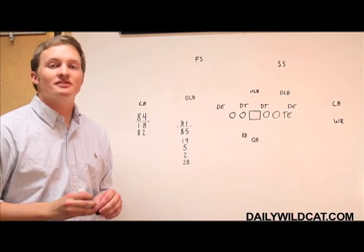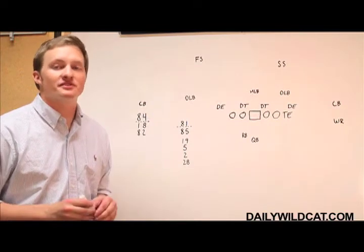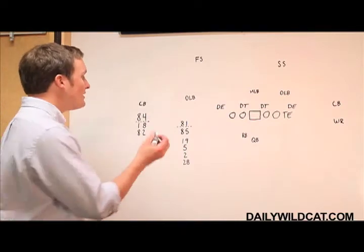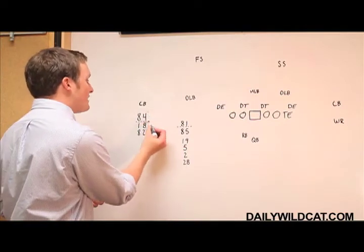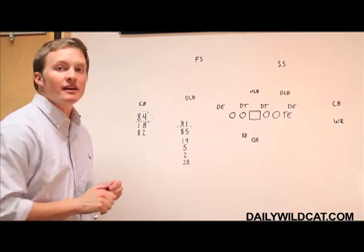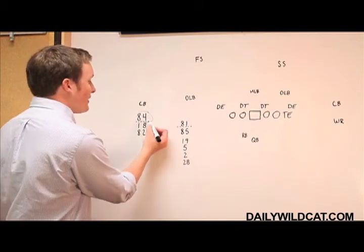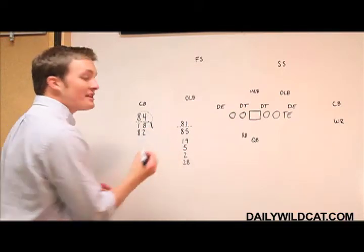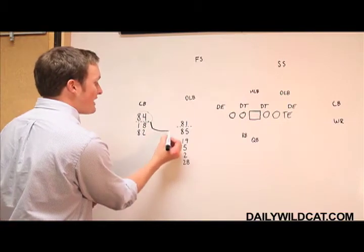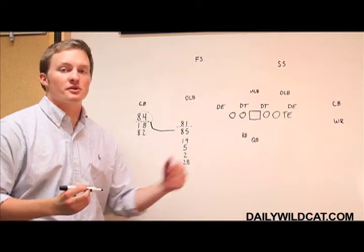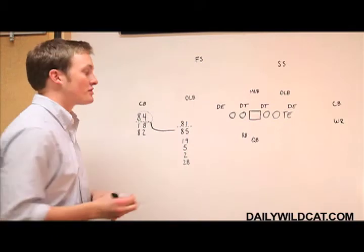The first one we'll look at is called a rocket screen, which, like a quick screen, is to the outside receiver. The outside receiver here, number 84, typically Terrell Turner, will come inside when the ball is snapped. He'll take the step behind the line of scrimmage like that, and then he'll literally rocket this way, coming toward the quarterback to make it a shorter throw and a shorter run.